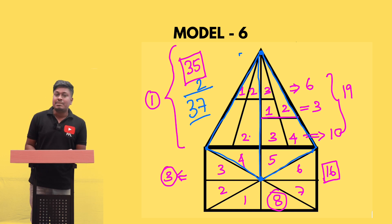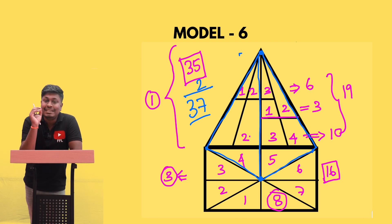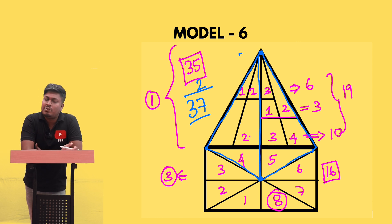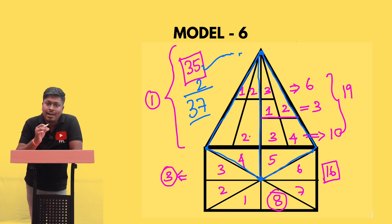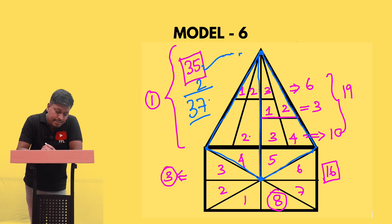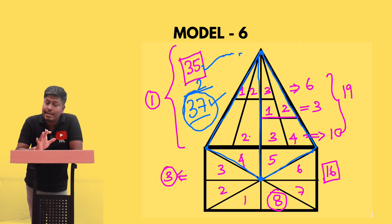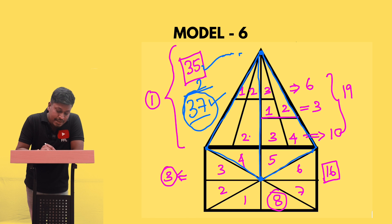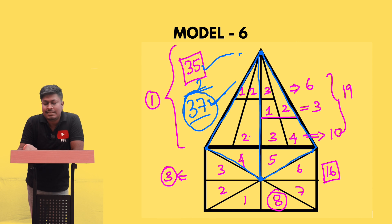The answer for this question is 37 — there are 37 triangles in the given figure. Most students will go with 35. Only students who know this logic and these shortcut tricks will get 37. This comes only with practice. You have to practice more and more questions to be able to give the exact answer of 37.